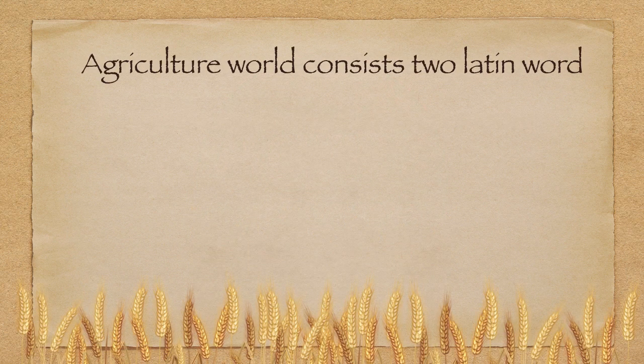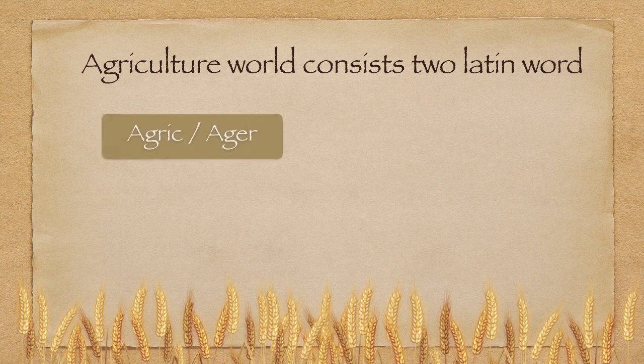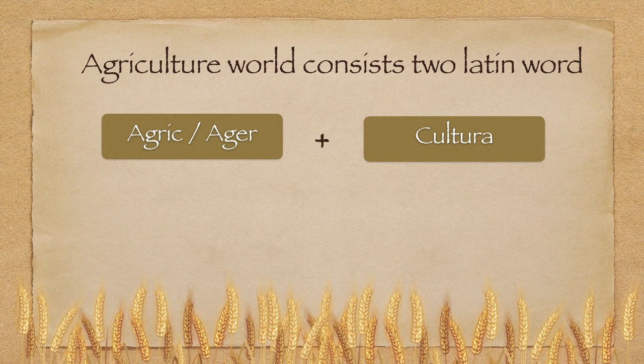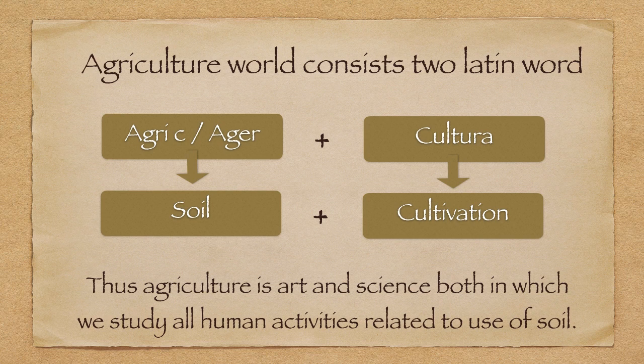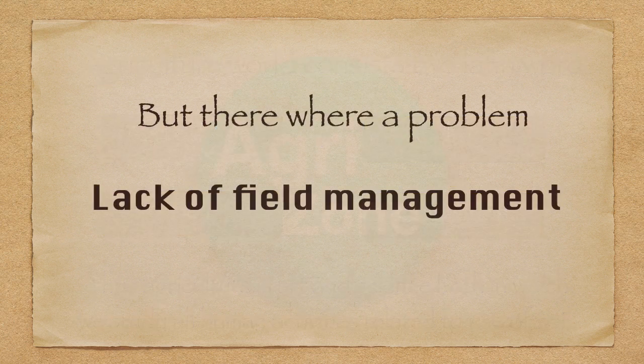The word 'Agriculture' consists of two Latin words: the first is 'Agric' or 'Agar', and the second is 'Cultura'. Agric means soil and Cultura means cultivation. Thus, agriculture is the art and science in which we study all human activity related to the use of soil.